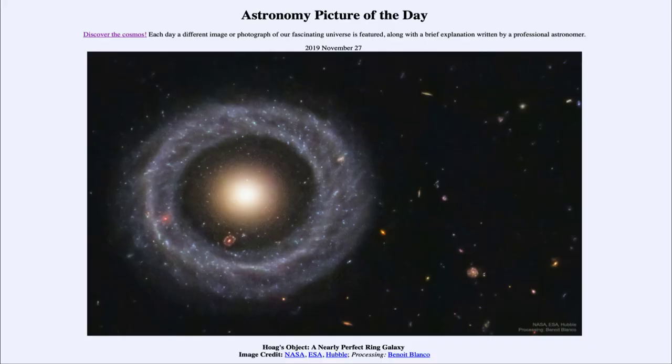Greetings and welcome to the introduction to astronomy. One of the things that I like to do in each of my introductory astronomy classes is to begin the class with the astronomy picture of the day from the NASA website, apod.nasa.gov/apod. Today's picture for November 27th, 2019 is titled Hoag's Object, a nearly perfect ring galaxy.